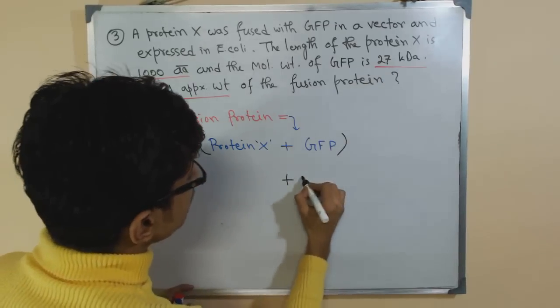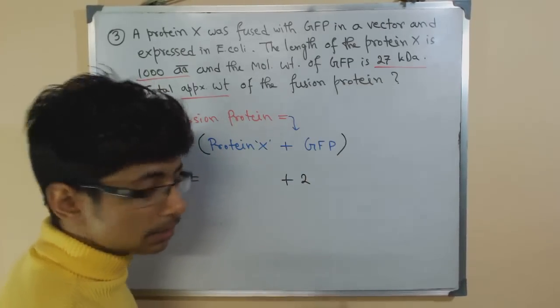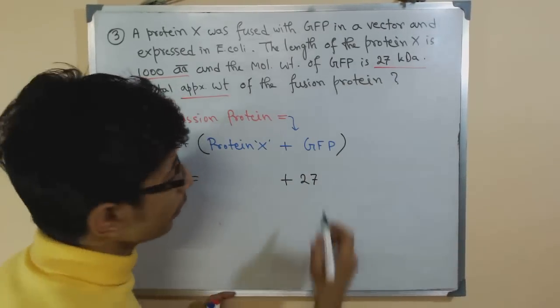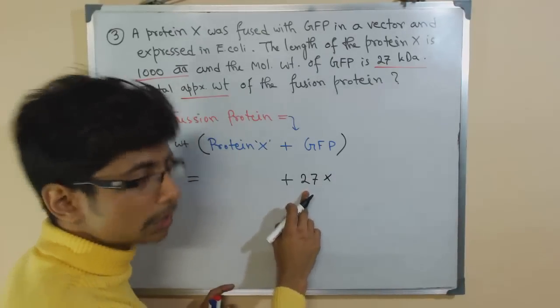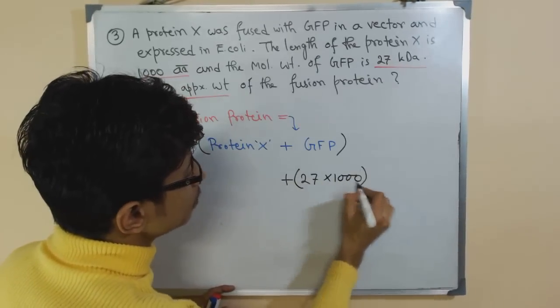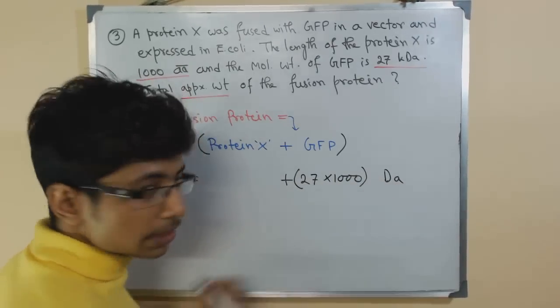Now in this case, the molecular weight of GFP is provided and that is 27 kilo Dalton. So let's break it into that for our calculation. 27 kilo Dalton means obviously we need to multiply with 1000 to convert it into Dalton value.